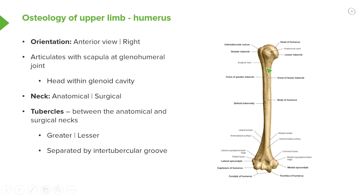The humerus has two necks. The first is the anatomical neck, which sits just behind the head of the humerus and is an important attachment site for the joint capsule of the glenohumeral joint. This dotted line indicates the anatomical neck, positioned between the head and two important bulges of bone known as tubercles, which sit distal to the anatomical neck.